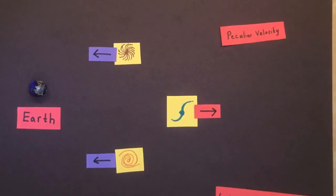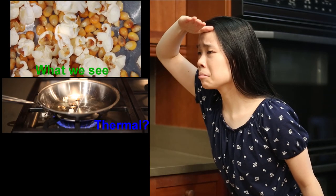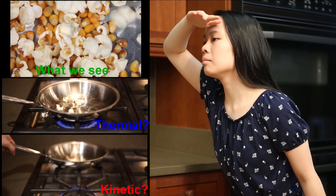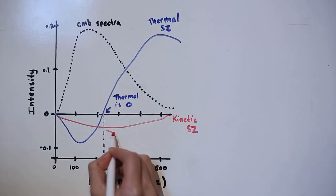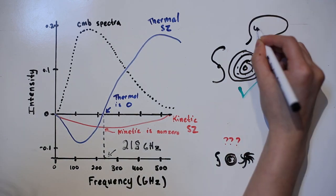Scientists can use the K-S-Z to measure the peculiar velocity of galaxies, but isolating it from the thermal effect has been a challenge. We can try measuring at a frequency at around 218 GHz, but sometimes the effect is so faint for smaller clusters we can't detect it.